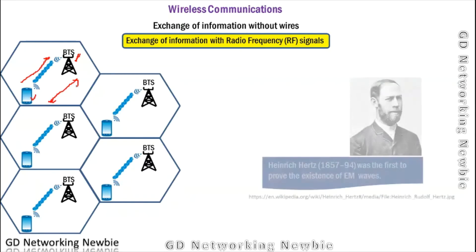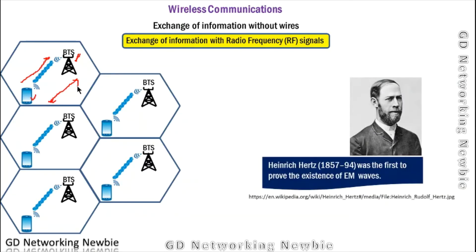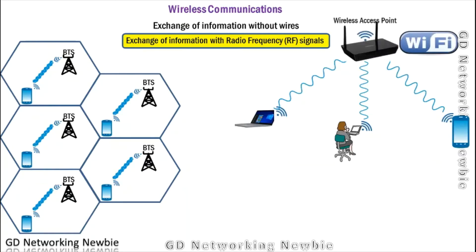When studying wireless communication, it's good to give credit to the people who worked on it. Heinrich Hertz was a German scientist who was the first to prove the existence of electromagnetic waves. Maxwell had previously developed a theory, and Hertz proved through experiment that these electromagnetic waves really exist. These are the waves we use today in every kind of communication — mobile, satellite, remote controls, garage openers, and more.